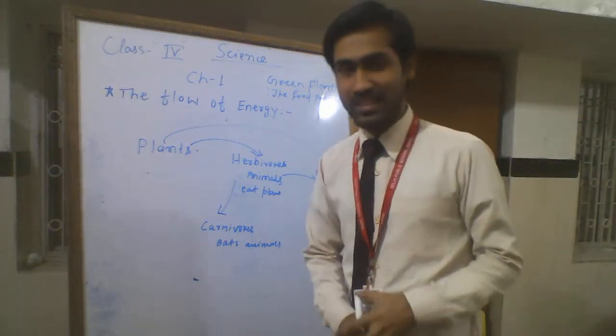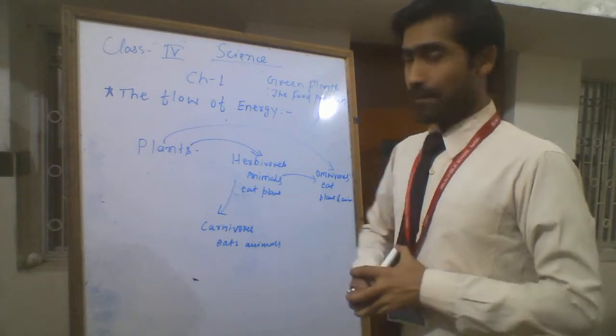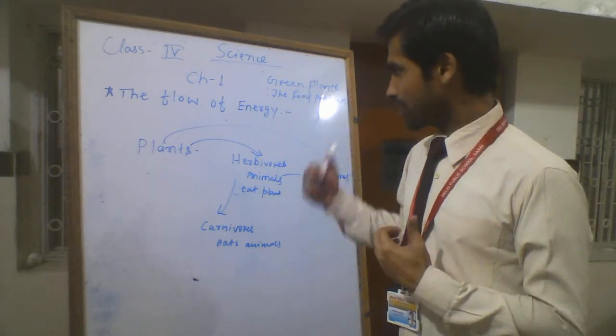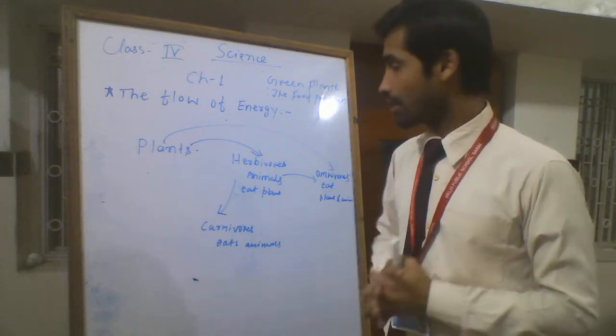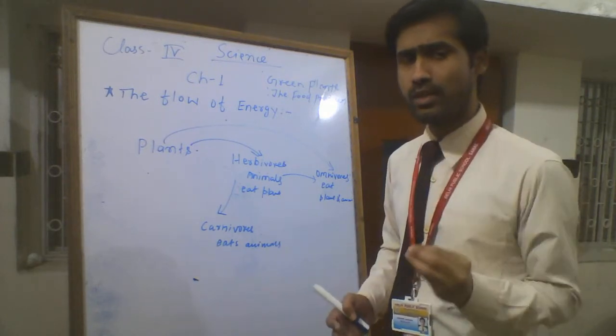Very good morning to all my viewers. Today we learn the last topic of this chapter: the flow of energy. Flow of energy means transfer of energy. The plants absorb energy from sunlight. The sun is the main source of energy.